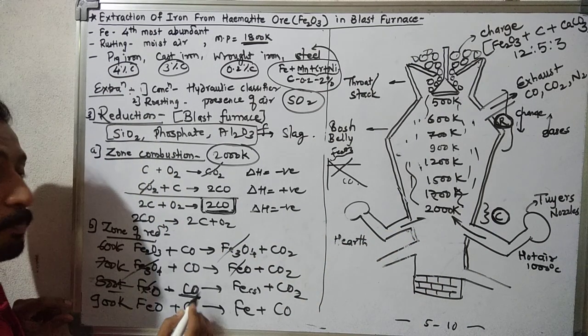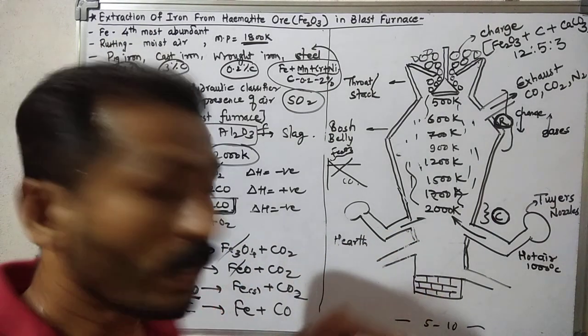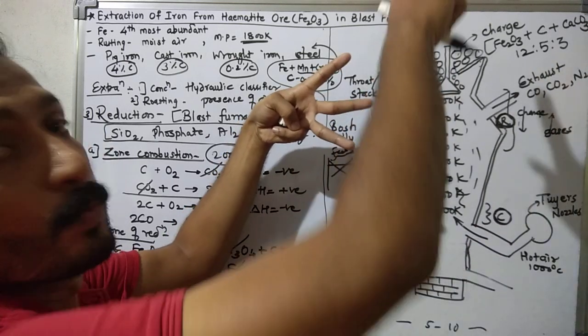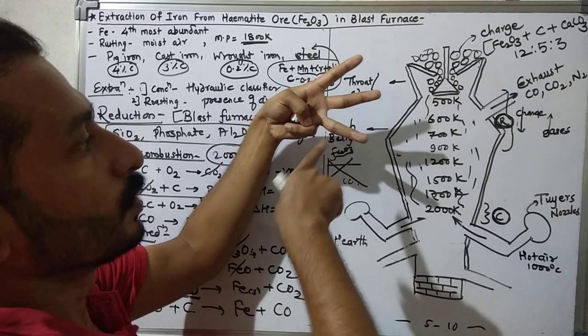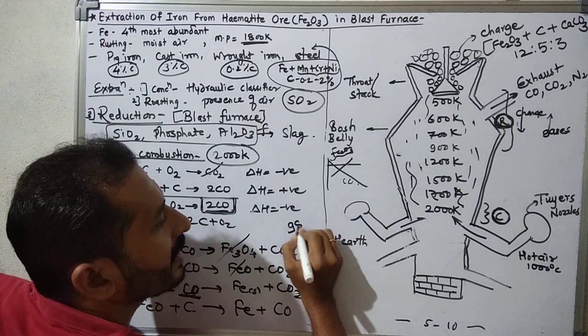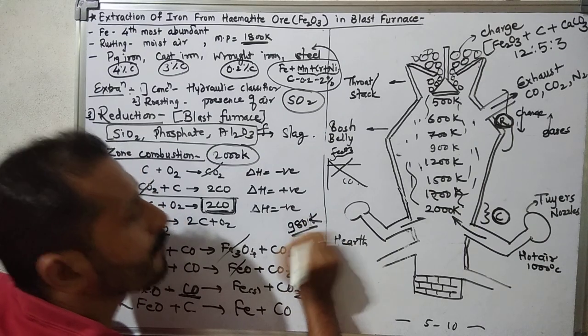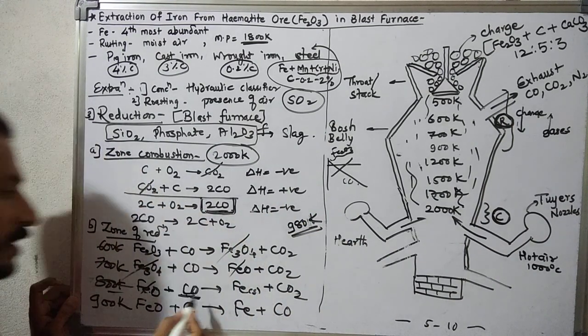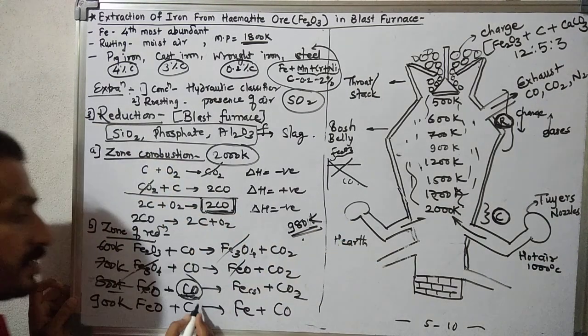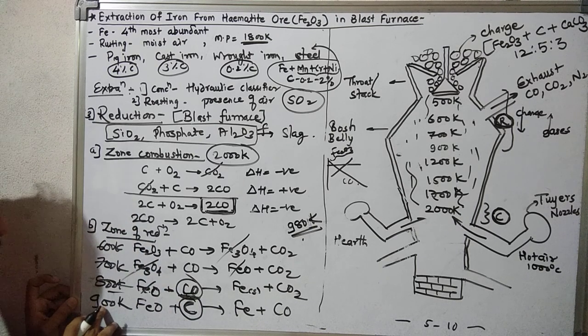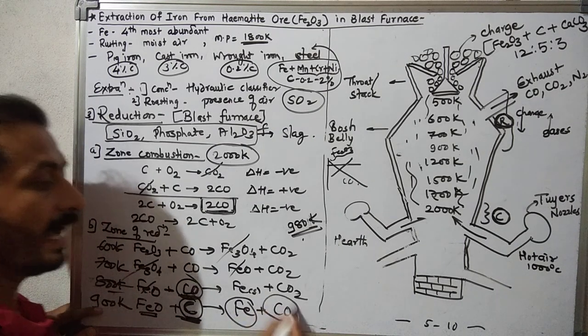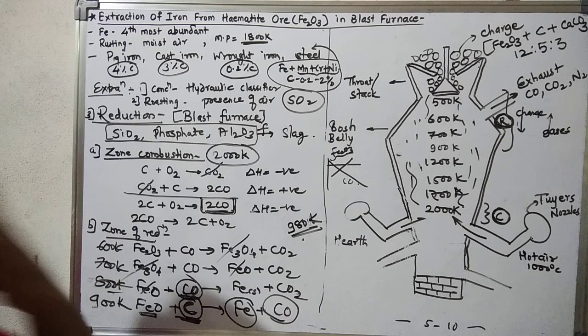CO is the best reducing agent at low temperature, below 980 Kelvin. When the temperature goes above 980 Kelvin, then carbon or coke becomes the best reducing agent. So above 980K temperature, FeO reacts with C, with coke, to form Fe and CO.